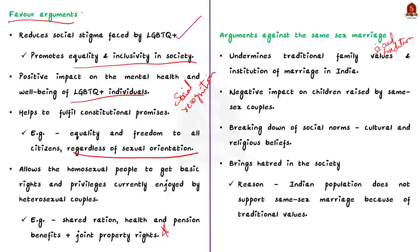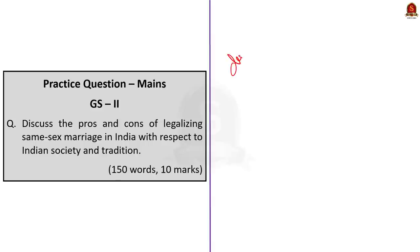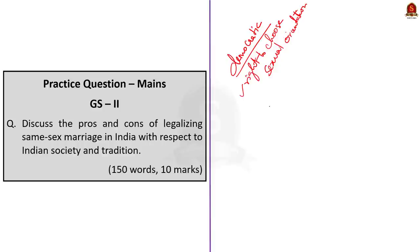Finally, allowing same-sex marriage may bring hatred in society, as the majority of India's population does not support it and believes it would affect traditional values, further encouraging discrimination. To conclude, India is a democratic country where every individual has basic rights including the right to choose their sexual orientation. To promote equality and integrity, the government should enact suitable legislation to address the concerns of homosexual couples. Society should also understand the feelings of the LGBTQ+ community and change its mindset to be inclusive rather than discriminatory.